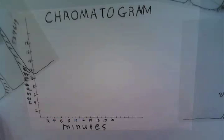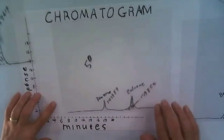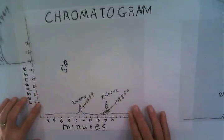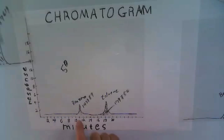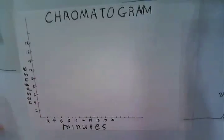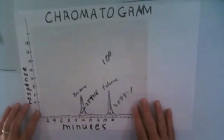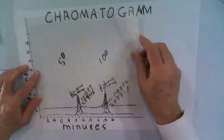So internal standards — how does this actually work? Let's start out by looking at a regular external standard calibration chromatogram. We have benzene at 50. We have two peaks. The size of the peaks is proportional to the 50. We have 100. The size of the peaks is now proportional to the 100, and notice they are twice as big.